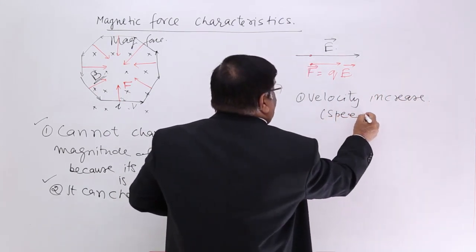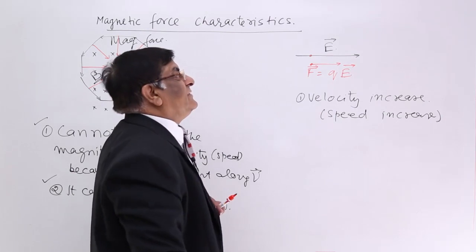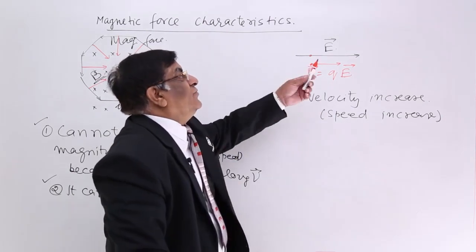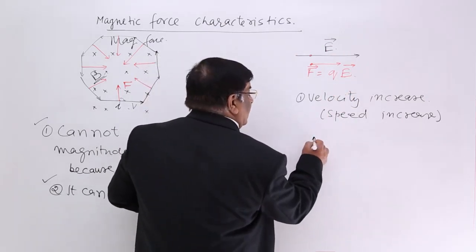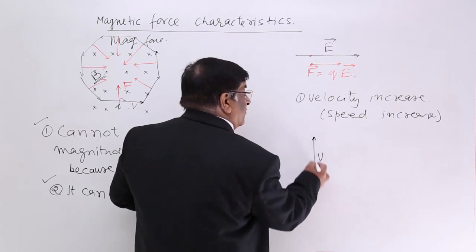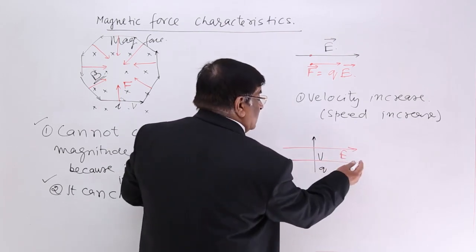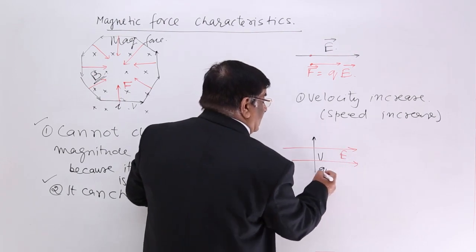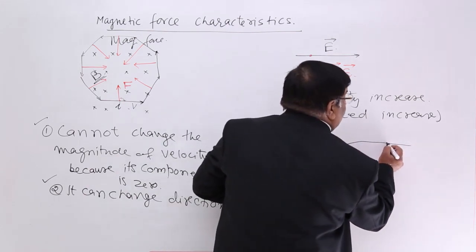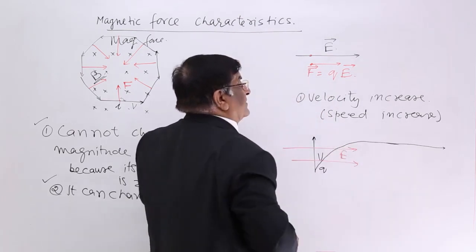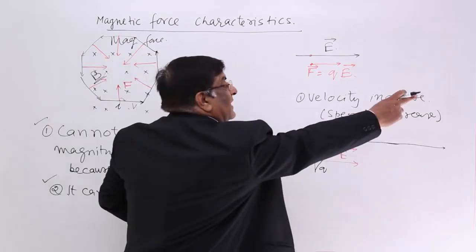Because of that acceleration, the magnitude of velocity — that is, speed — increases. What happens to its direction? The answer is direction does not change; it keeps on moving in the direction of E. If the charge was moving in some direction and there is an electric field in a particular direction, because of the force QE it will bend toward the field direction and then keep moving in that direction.